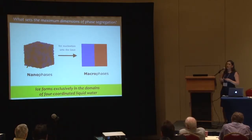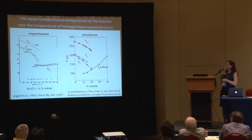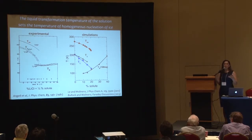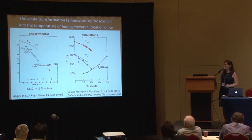Ice forms exclusively in the domains of four-coordinated liquid water — the same as in pure water. Looking at the phase diagram, the temperature of liquid transformation — where four-coordinated domains form — is almost the same as the temperature of crystallization, just slightly lower because it takes some time to shovel the ions away at simulation speed. The temperature of crystallization equals the temperature of liquid transformation, as I showed before for pure water.